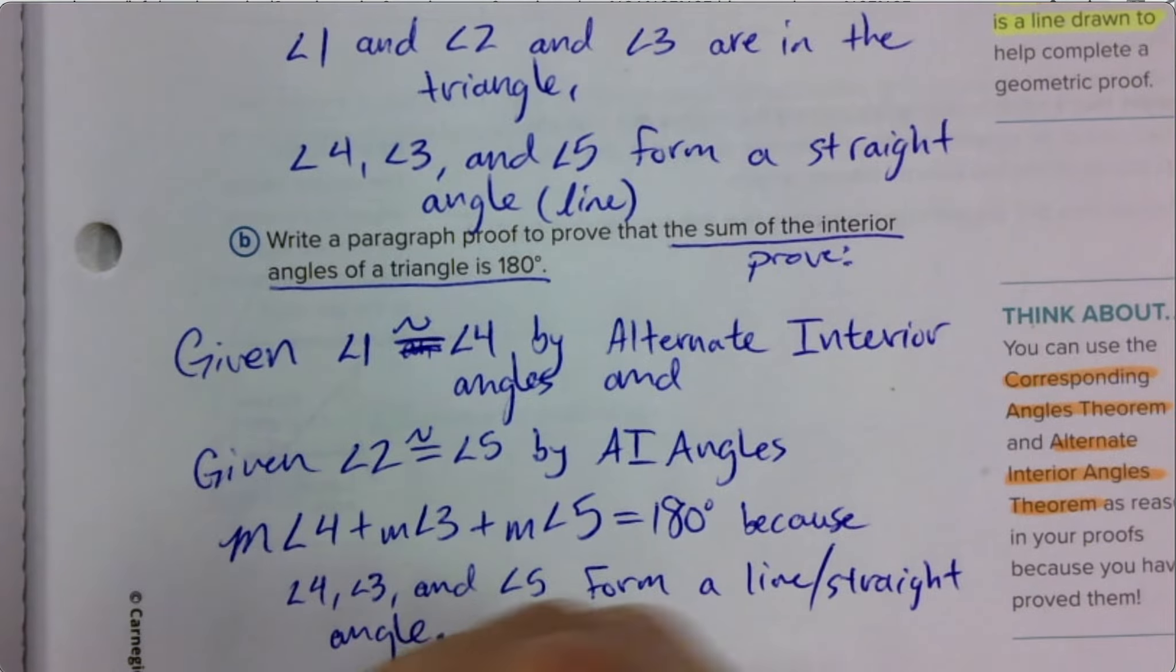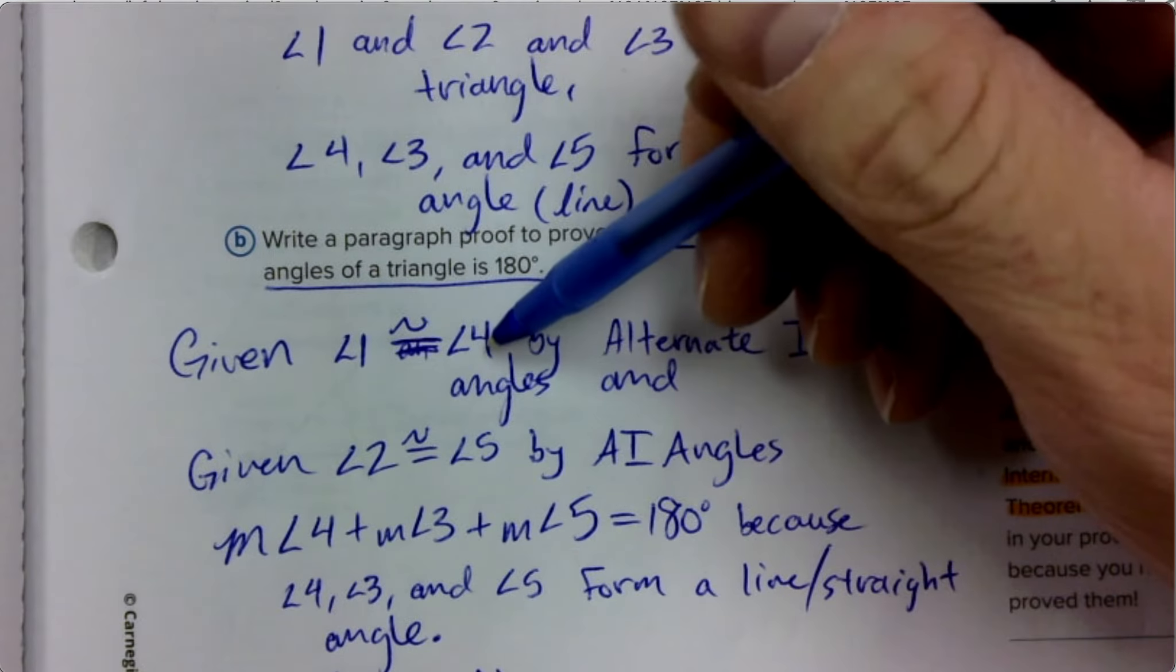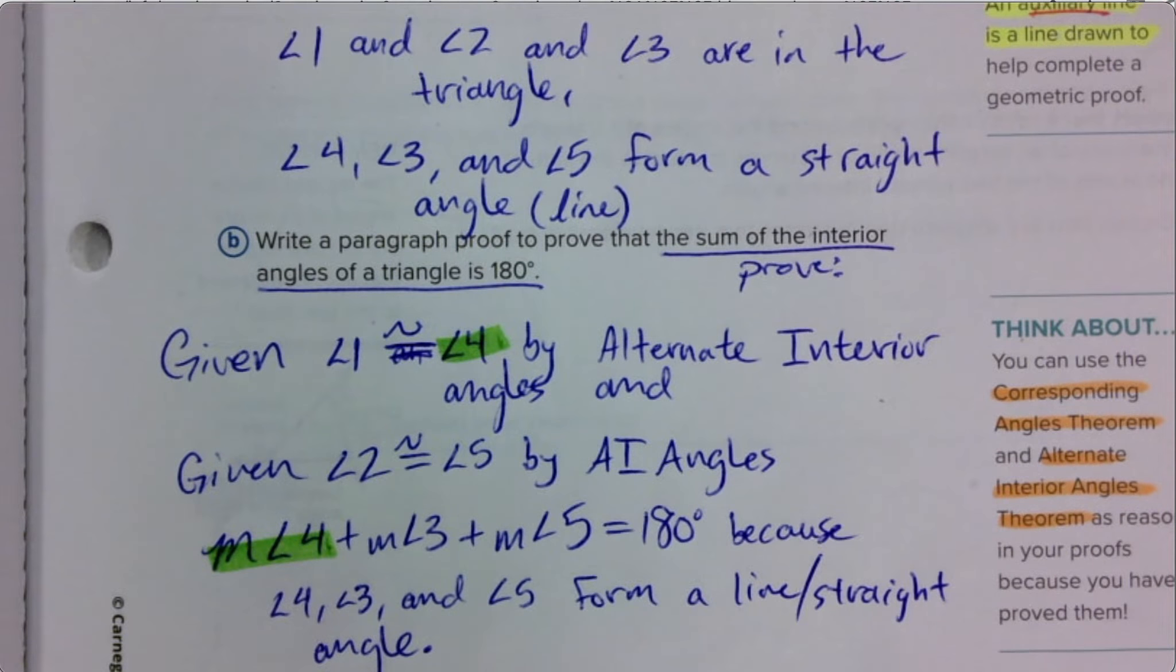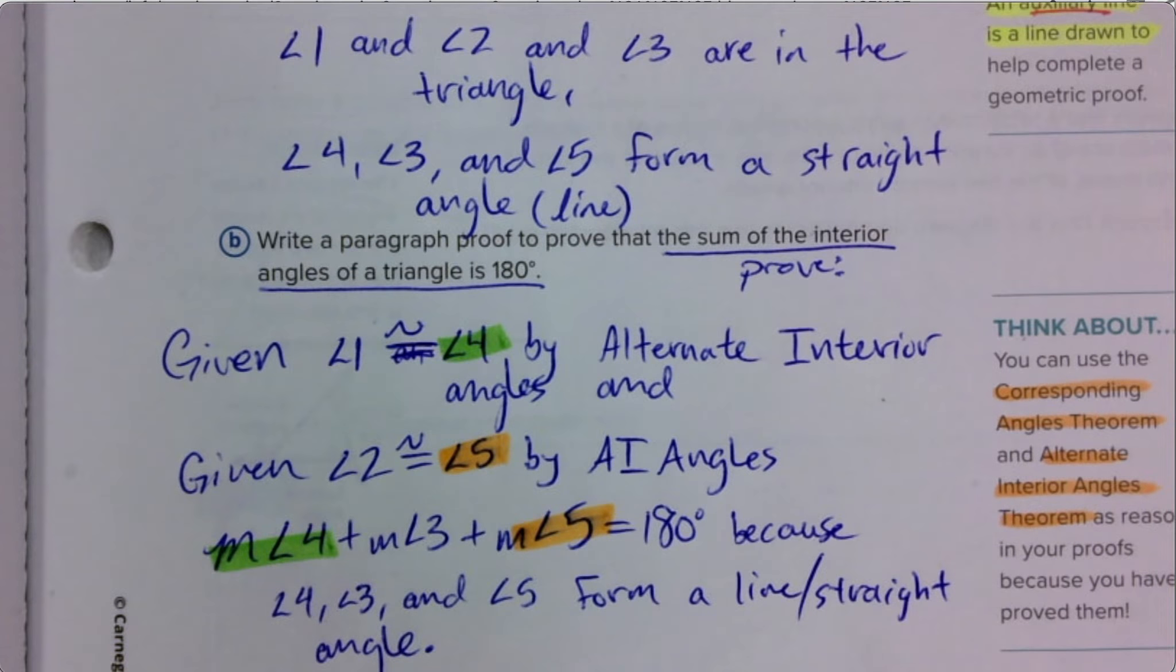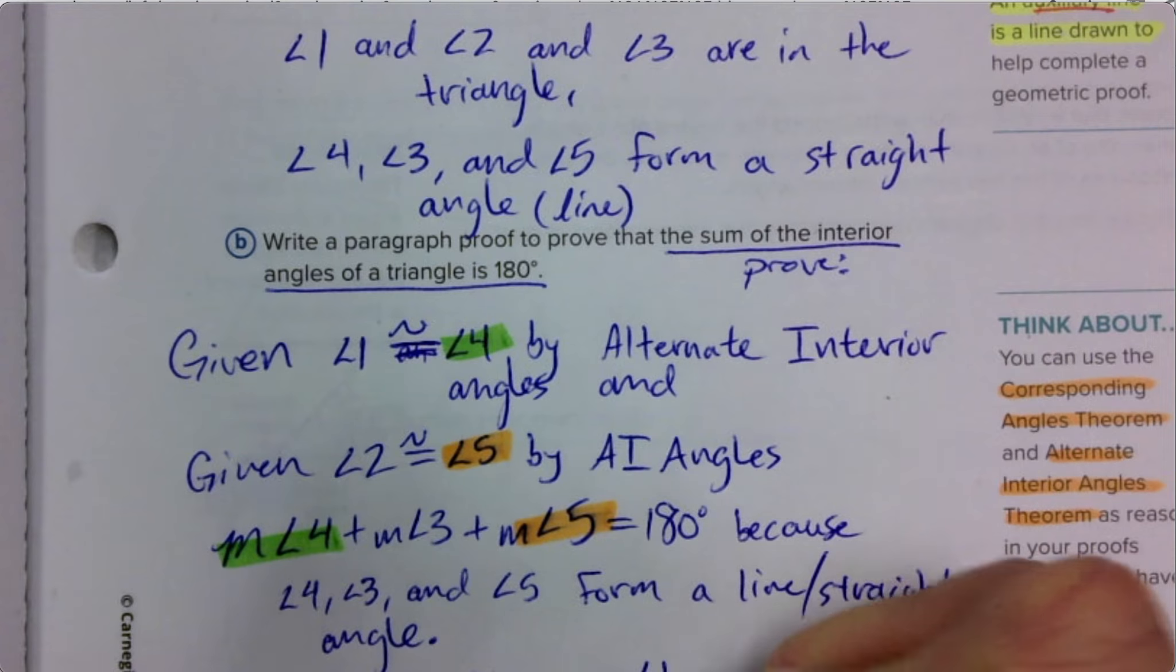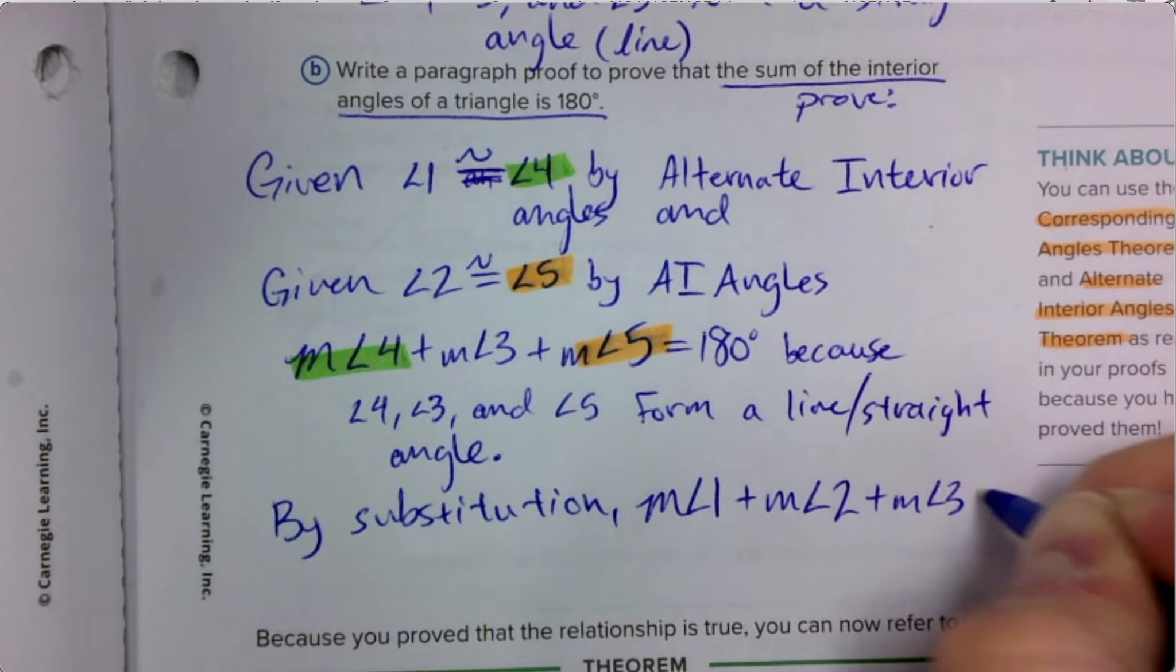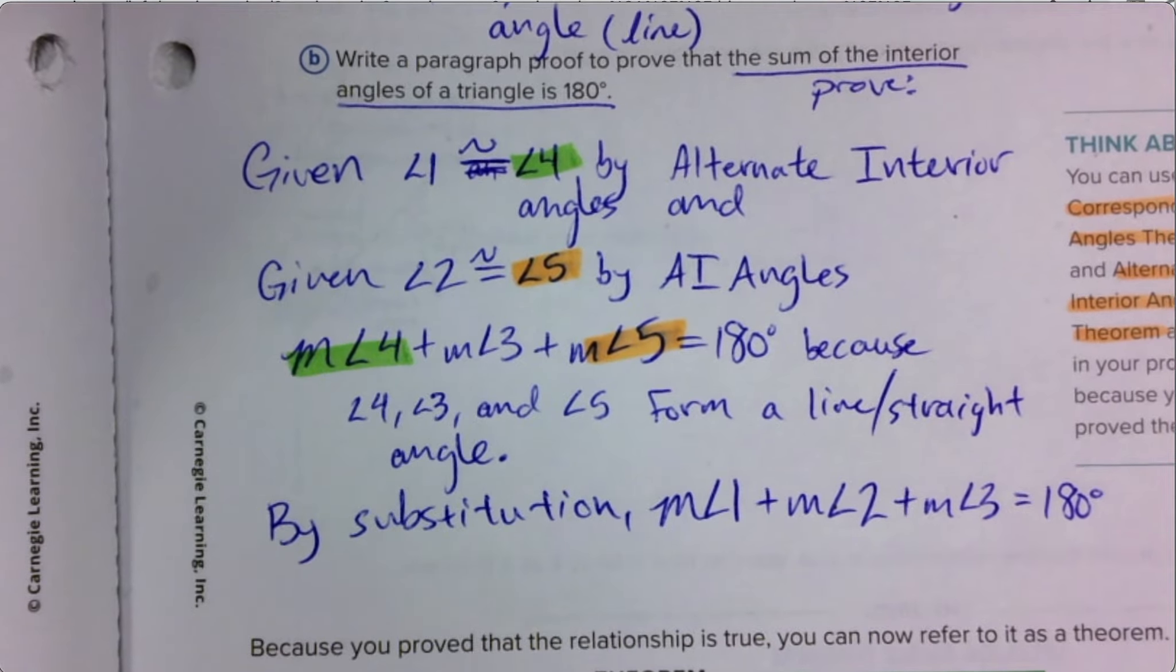By substitution, we're going to take and replace four with a one. Replace four with one. And we're going to replace five with two. So that means by substitution, the measure of angle one plus the measure of angle two plus the measure of angle three is 180 degrees. Those are the interior angles of a triangle.